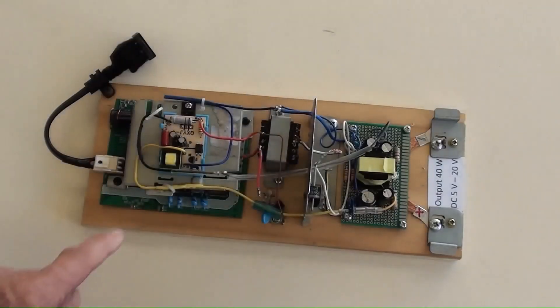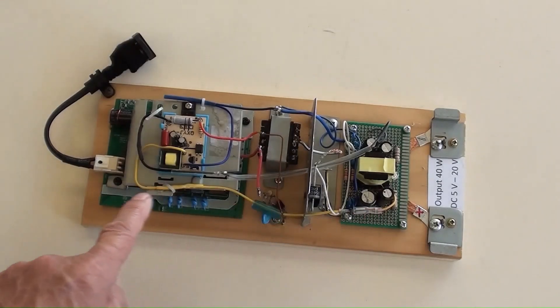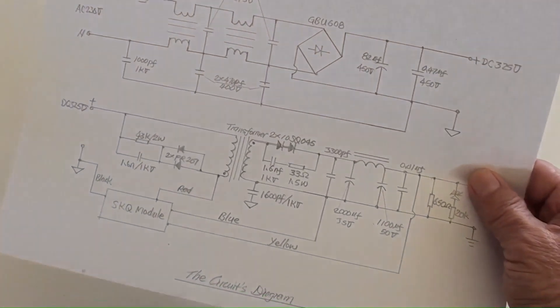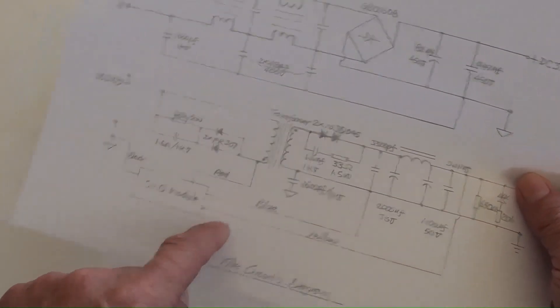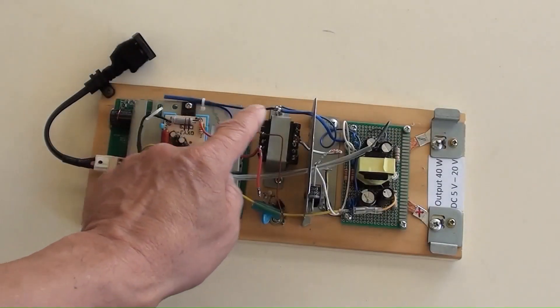Yellow wire is arranged along this way, which is the feedback wire from the output positive to the module. Blue wire is on that way, which is the earth wire from the output negative to the module.